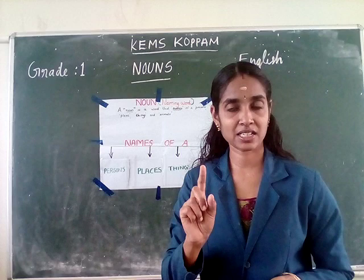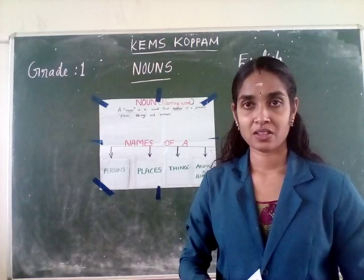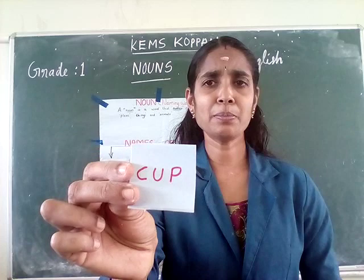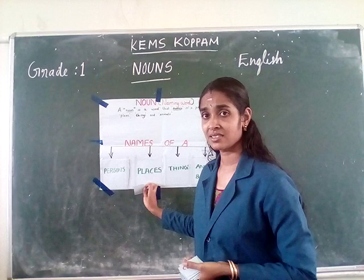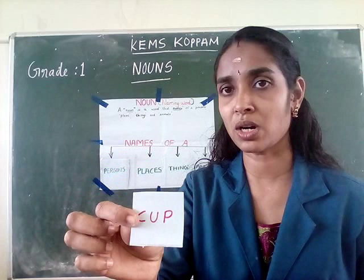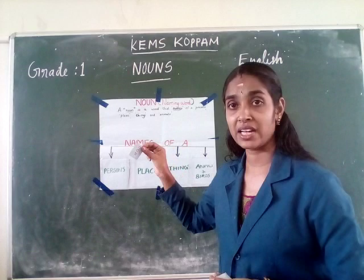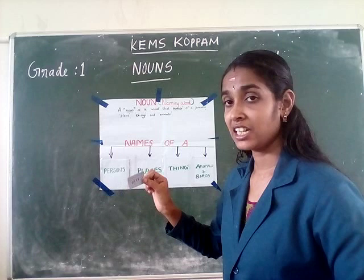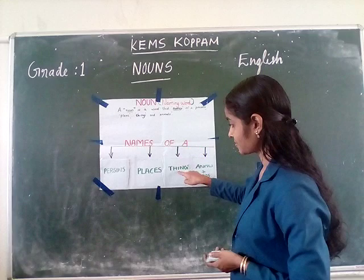First I will show one card as an example. What's that? Cup. Is cup a name of a person, place, thing, or animal? In which box should I put that card? Yes — say 'thing.' Cup is the name of a thing. So I want to put the card into the third box — things box.